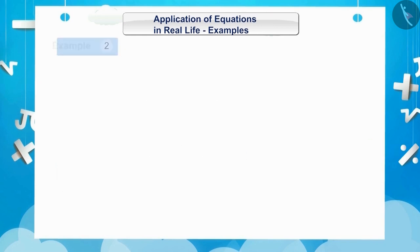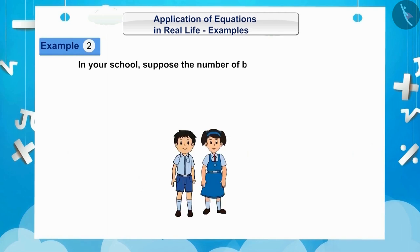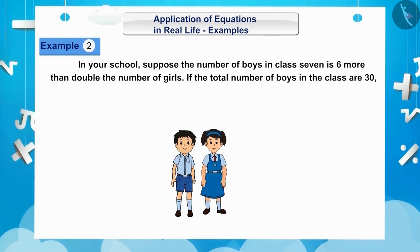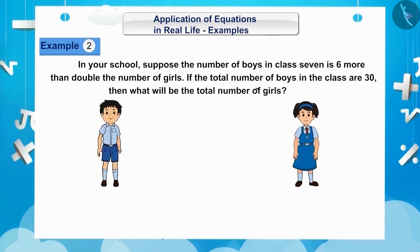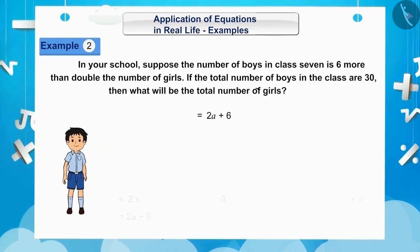Let's understand another example. In your school, suppose the number of boys in class 7 is 6 more than double the number of girls. If the total number of boys in the class are 30, then what will be the total number of girls? Can you tell me what the equation will be? Let's solve this question. If we suppose the number of girls in the class to be A, then the number of boys is equal to 2A plus 6.